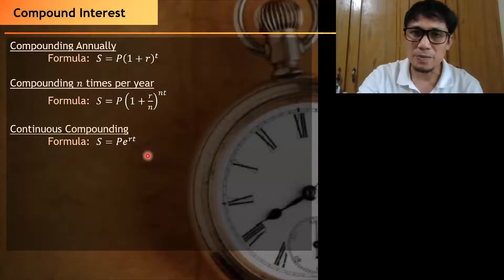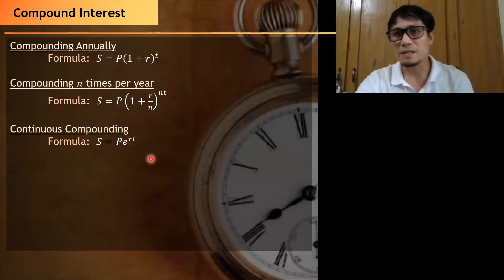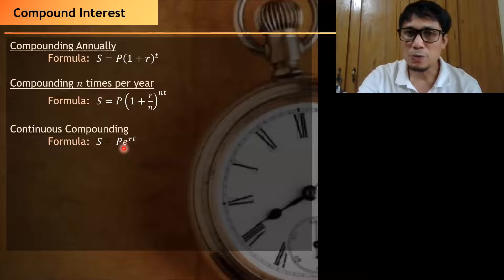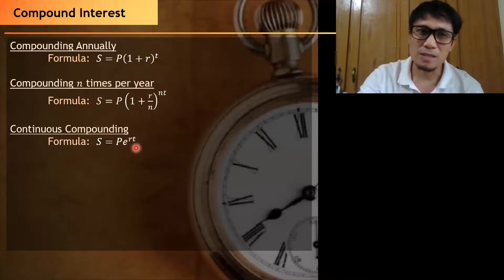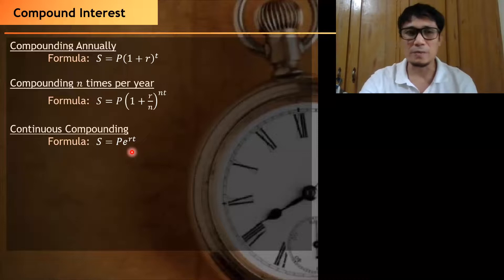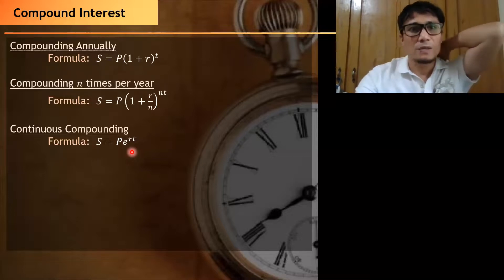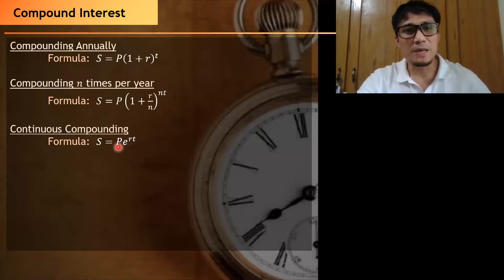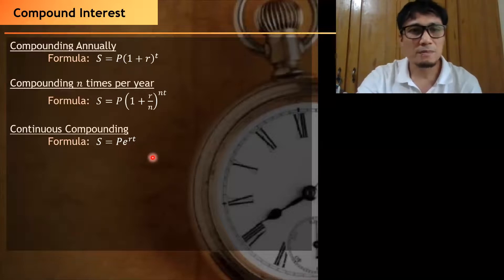Here, P is your principal amount, R is the rate of interest, and T is the time. We are now using E, which is not a variable but a constant — it is called the Euler number, also known as a transcendental number. The value of E is approximately 2.71. Use that as the base, and multiply the principal amount by E raised to RT.